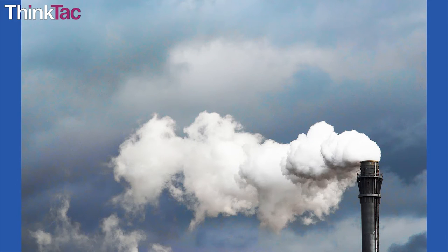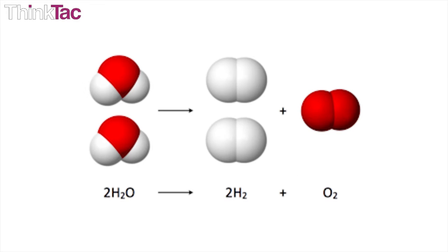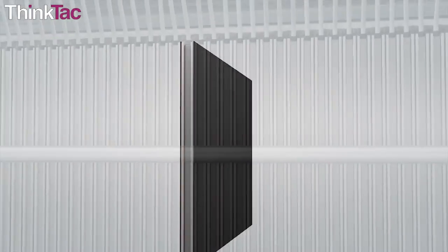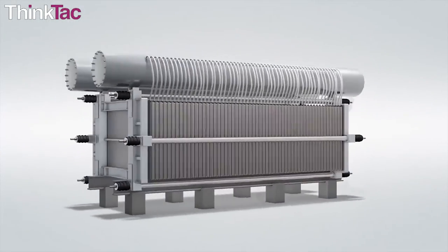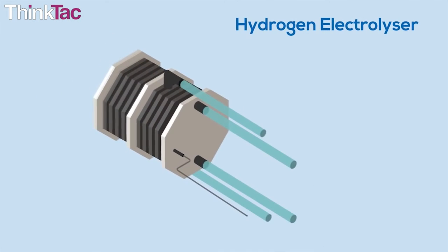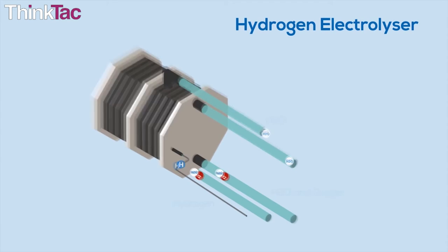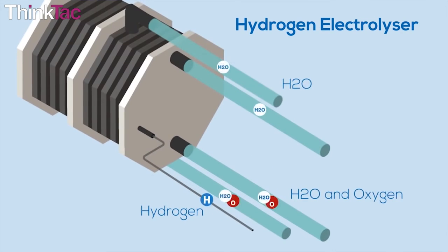This is only because all the other sources produce byproducts like carbon dioxide, carbon monoxide, and other greenhouse gases. Electrolysis dissociates water into hydrogen and oxygen. This reaction takes place in a unit called an electrolyzer. Electrolyzers consist of an anode and a cathode separated by an electrolytic medium. A simple diagram below will help you understand it better.